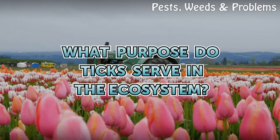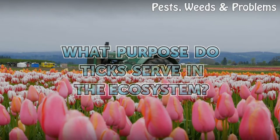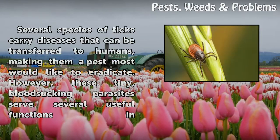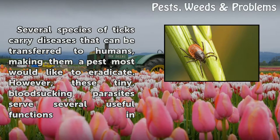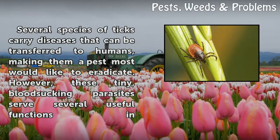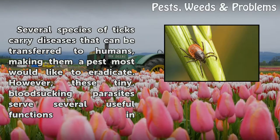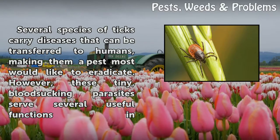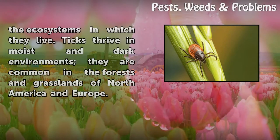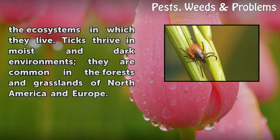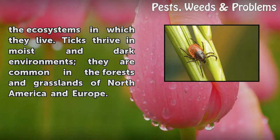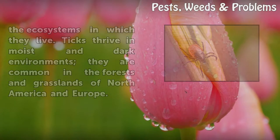What purpose do ticks serve in the ecosystem? Several species of ticks carry diseases that can be transferred to humans, making them a pest most would like to eradicate. However, these tiny blood-sucking parasites serve several useful functions in the ecosystems in which they live. Ticks thrive in moist and dark environments; they are common in the forests and grasslands of North America and Europe.